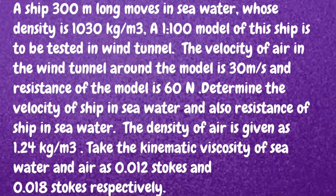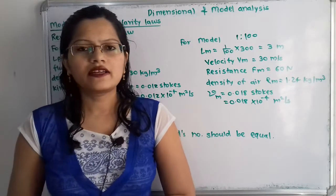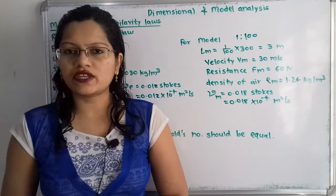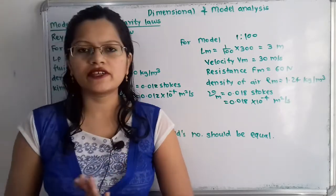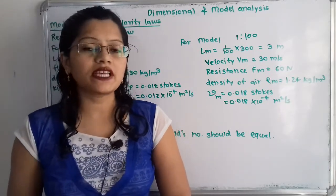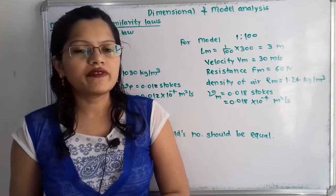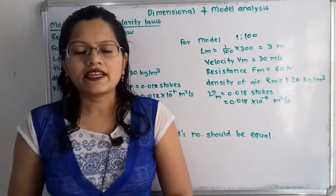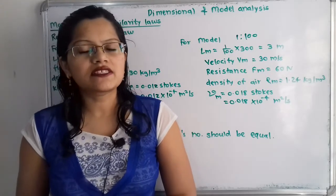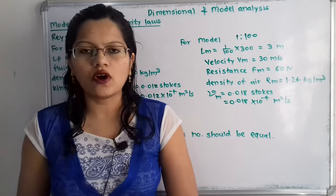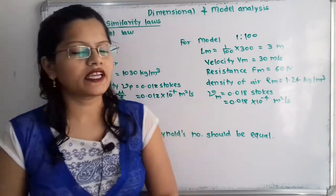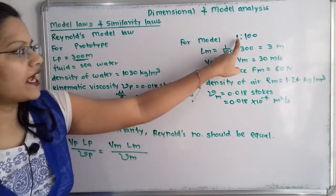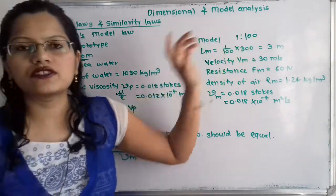The kinematic viscosity of seawater and air are 0.012 stokes and 0.018 stokes respectively. Now let us understand the given question. The ship moves in seawater — the ship is the actual structure, so we take it as the prototype. The model has a scale of 1:200.